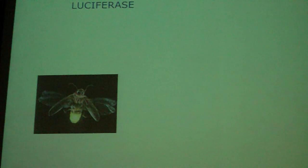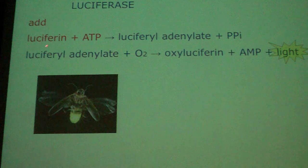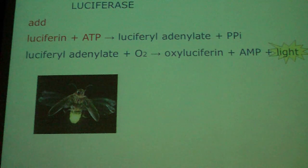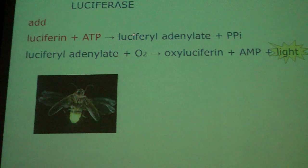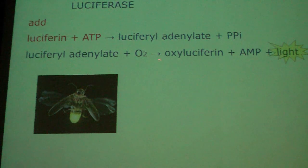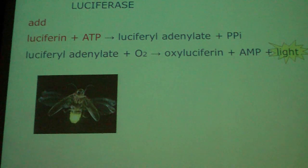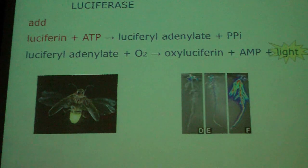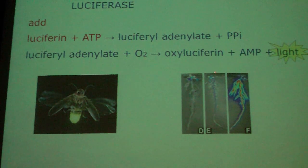Another well-known reporter is luciferase, isolated from the firefly. What happens is that luciferin and ATP — if you want to assay luciferase activity outside of the firefly, you need to add these externally; the firefly itself produces them. Luciferin and ATP are turned over to luciferyl adenylate and pyrophosphate. Luciferyl adenylate and oxygen then give oxo-luciferin and AMP, with the emission of light — photons are emitted, and these can be detected with a cooled CCD camera.